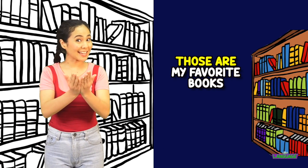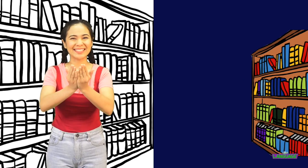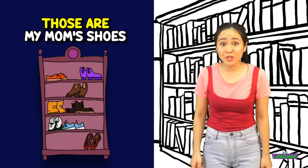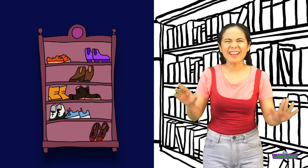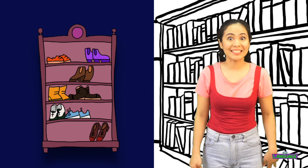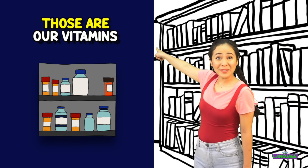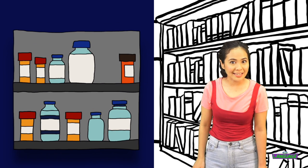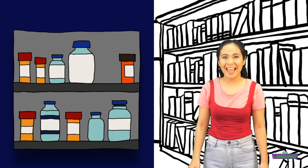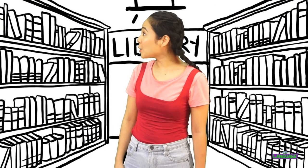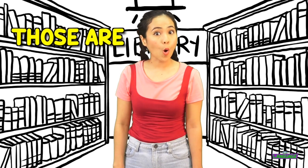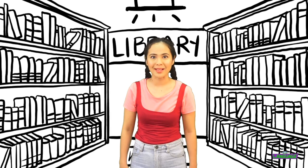Those are my favorite books. Reading is one of my favorite hobbies. Those are my mom's shoes. My mom loves her shoes and has them in different colors. Those are our vitamins. My siblings and I drink our vitamins every day. We use 'those are' to point out people or objects that are far from us.